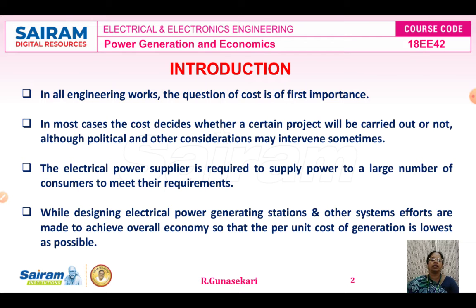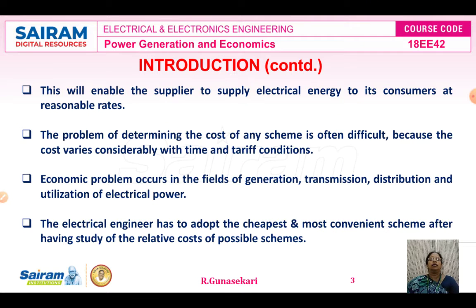The electrical power supplier requires to supply power to a large number of consumers to meet their requirements. While designing the electrical power generating stations and other systems, which are made to achieve overall economy, the per-unit cost — that means the kilowatt hour, which is one unit — the per-unit cost of generation should be as low as possible. This enables the supplier to supply electrical energy to consumers at reasonable rates.